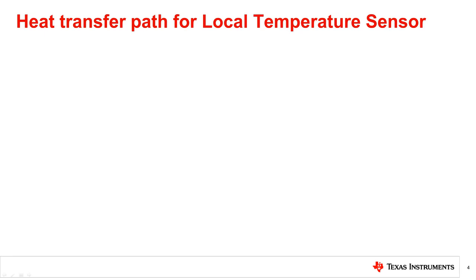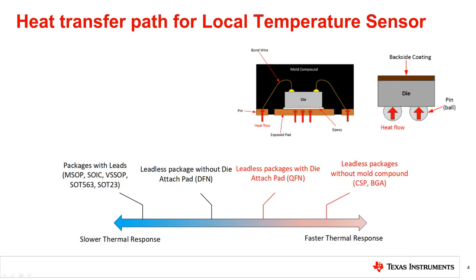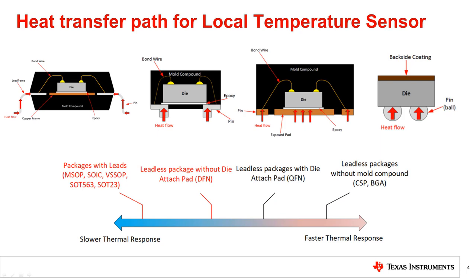The package type choice determines how quickly the temperature sensor can respond to changes in temperature. This image shows the relative thermal response rates of different classes of selected SMT package types used for temperature measurements. Package types without a mold compound, such as CSP or DSBGA, and packages with a DAP, such as QFN or DFN, are well suited if a fast thermal heat transfer from the PCB is desired, while package types without a DAP are better in applications where slower response rates are desired. A fast thermal response rate allows the temperature sensor to respond to any temperature change quickly and therefore provide a better response to changes in the system conditions.